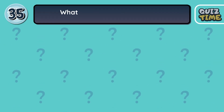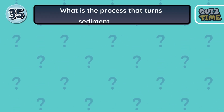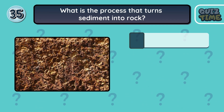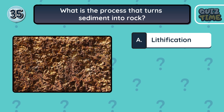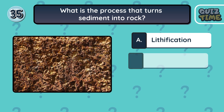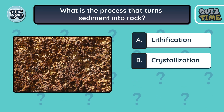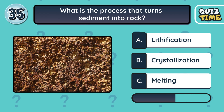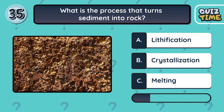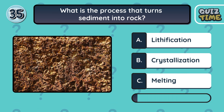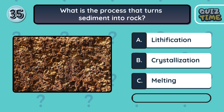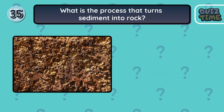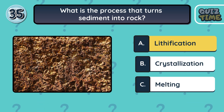Number 35. What is the process that turns sediment into rock? A. Lithification. B. Crystallization. C. Melting. The correct answer is A. Lithification.